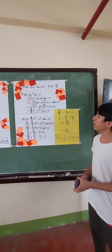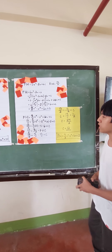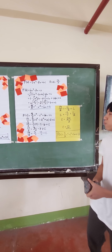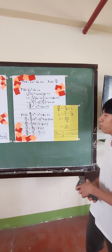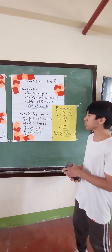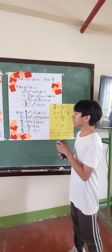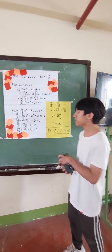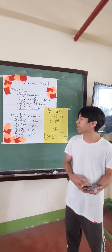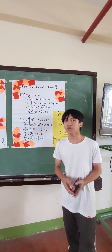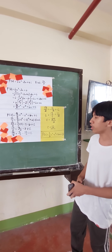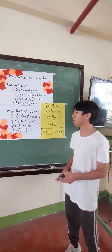Now let's substitute f of negative 1, which equals 3 over 2 times negative 1 to the 4th minus negative 1 squared plus 6 times negative 1 plus c. So 13 over 2 equals 3 over 2 minus 1 minus 6 plus c. That gives 3 over 2 minus 7 plus c. The LCD is 2, so 7 becomes 14 over 2. We have 13 over 2 equal to 3 over 2 minus 14 over 2 plus c.